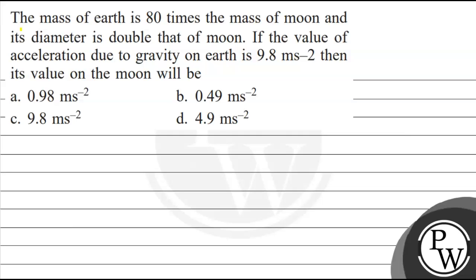Let's read this question. The question says that the mass of earth is 80 times the mass of moon and its diameter is double that of moon. If the value of acceleration due to gravity on earth is 9.8 meter per second square, then its value on the moon will be. Options are 0.98, 0.49, 9.8, or 4.9 meter per second square. We have to choose the correct option.